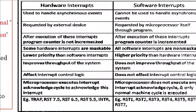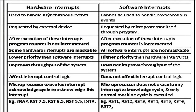Hardware interrupts are used to handle asynchronous events — those which are not synchronous, they are happening any time. Software interrupts cannot be used to handle asynchronous events. Hardware interrupts are requested by the peripheral device or the external device. Software interrupts are requested by the microprocessor itself, through certain programs, certain code, certain instructions.